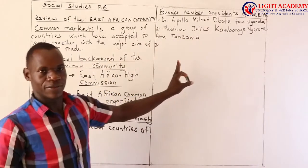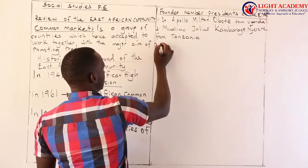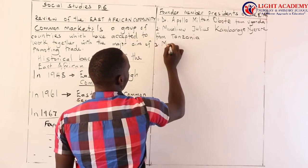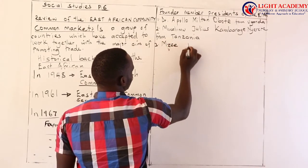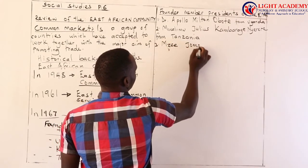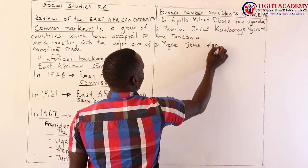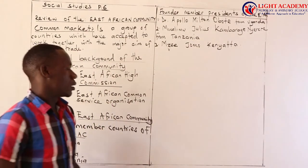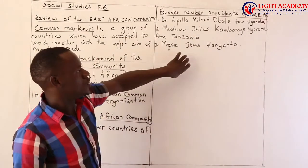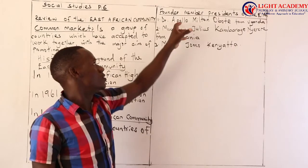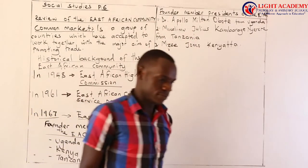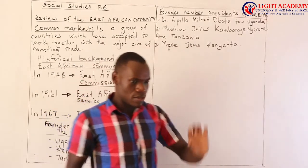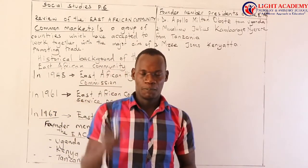And number three, the founder member president from Kenya was Mzee Jomo Kenyatta. So the founder member presidents who formed the East African Community were Dr. Apollo Milton Obote of Uganda, Julius Kambarage Nyerere of Tanzania, and Mzee Jomo Kenyatta of Kenya.